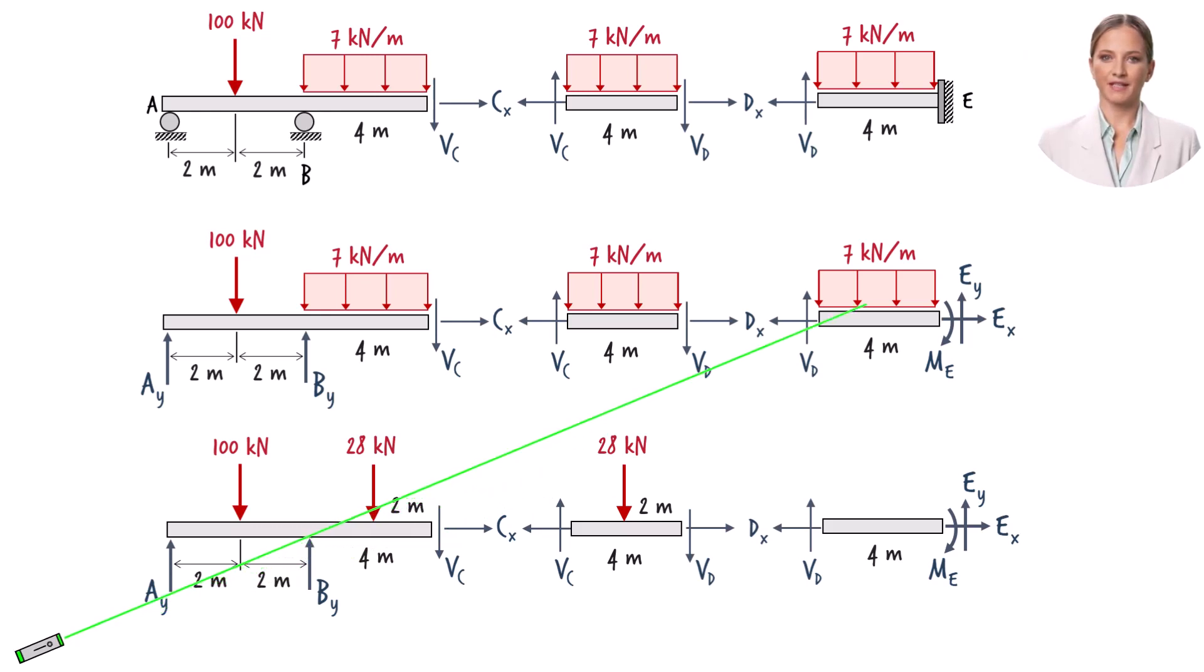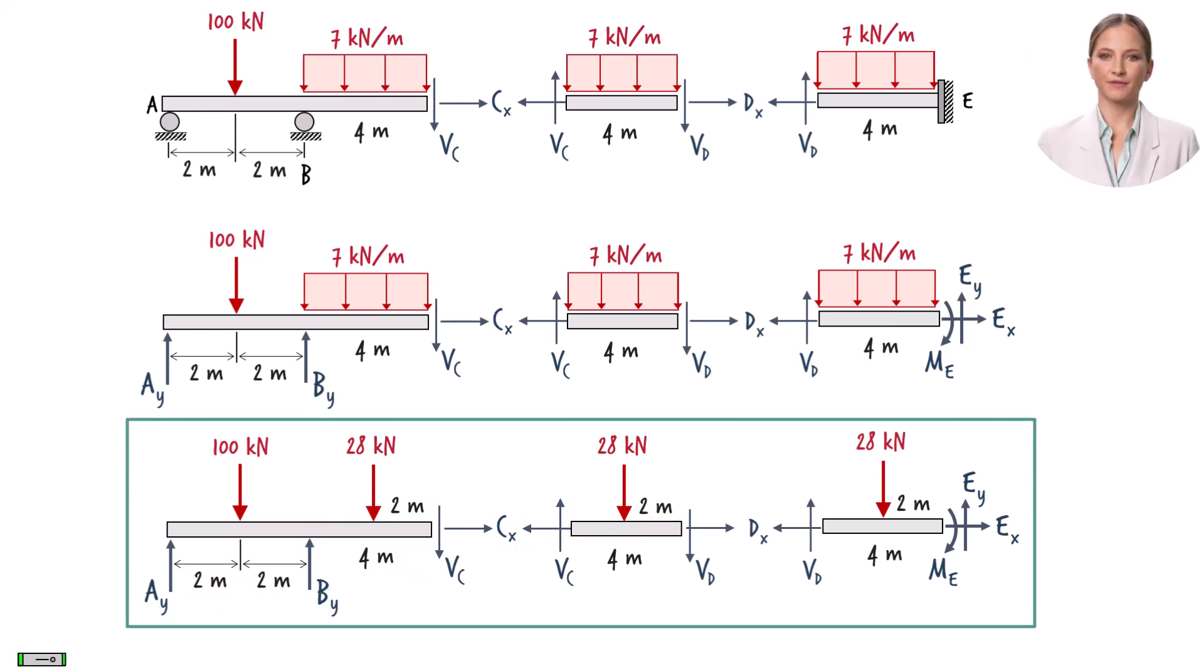Similarly, this rectangle can be replaced with a point load of 28 kilonewtons. This diagram constitutes the complete free body diagram for the beam.